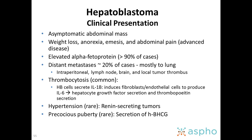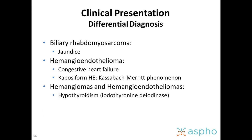But obviously the most common metastatic site is the lungs. Many of these kids present with thrombocytosis. It's rare that patients may present with hypertension or precocious puberty due to secretion of renin or beta-HCG. Differential diagnosis must consider biliary rhabdomyosarcoma, which usually presents with jaundice, and hemangioendothelioma, which may present with congestive heart failure or Kasabach-Merritt phenomenon. Hemangiomas and hemangioendotheliomas can also present with hypothyroidism due to iodothyronine deiodinase.